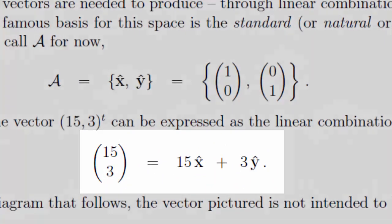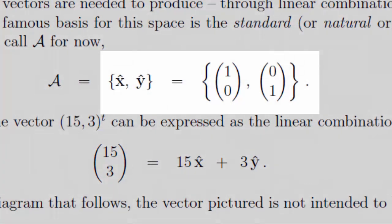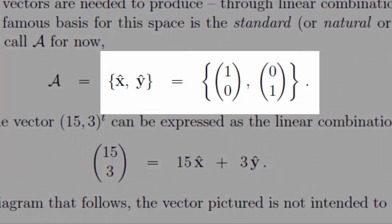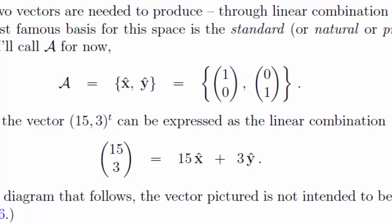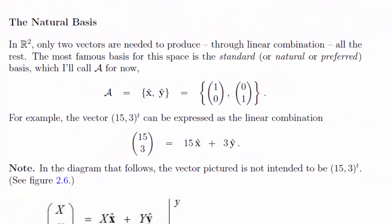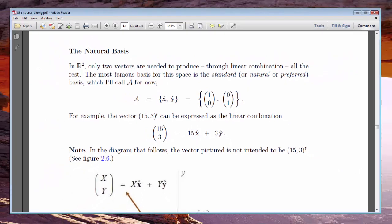The most familiar basis for R2 is made up of the two vectors 1, 0, and 0, 1, also called x-hat and y-hat. We'll refer to them as the natural or preferred basis, and I'll show you how any vector in R2 can be expressed as a linear combination of x-hat and y-hat.